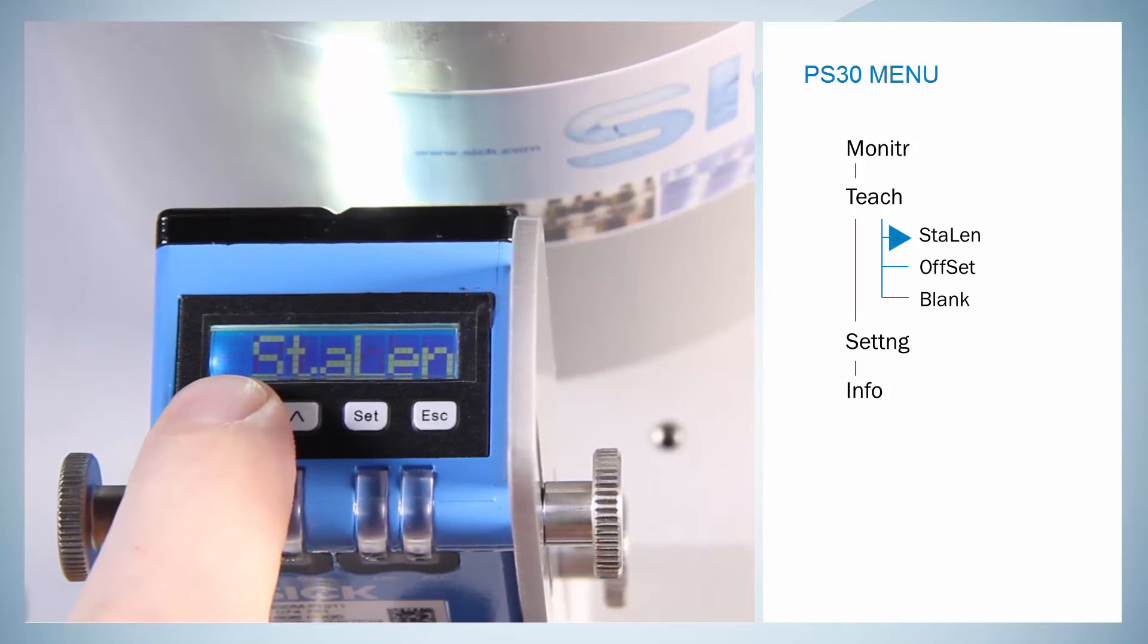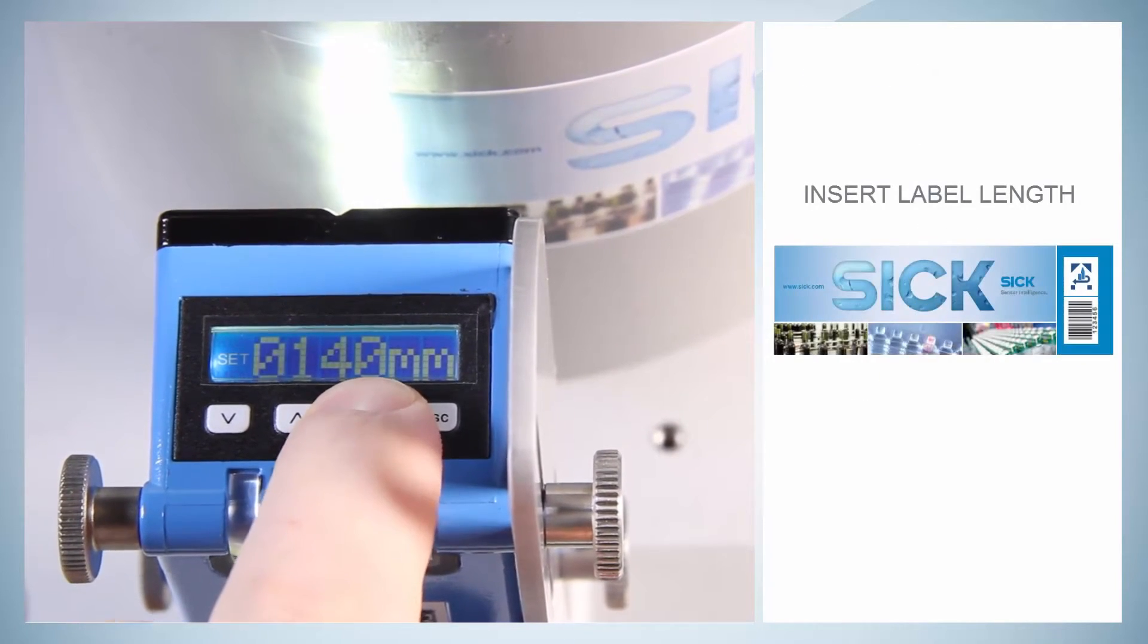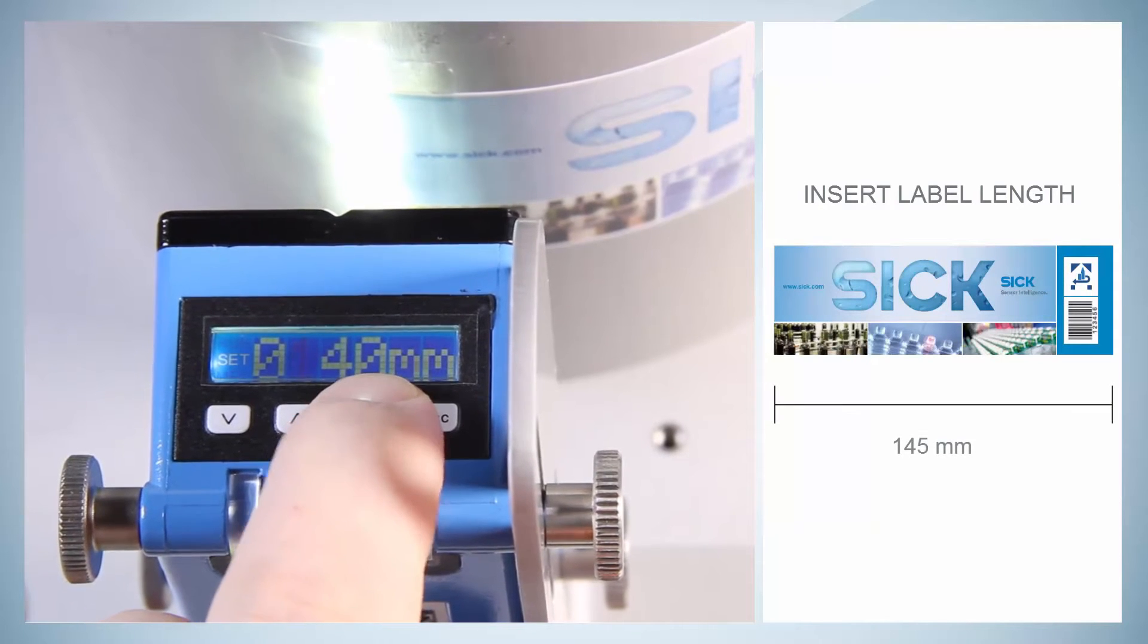First, the item start length teach is selected. The label length is now requested and for the sick label the length is 145 mm.